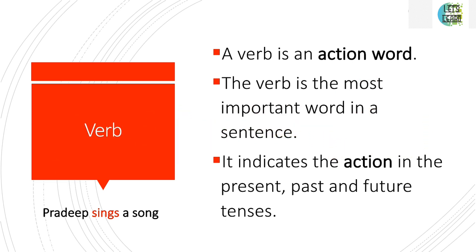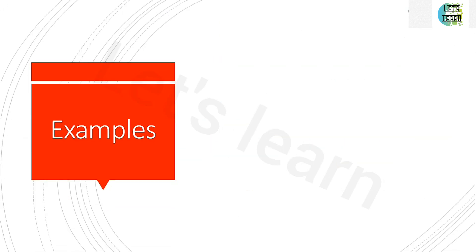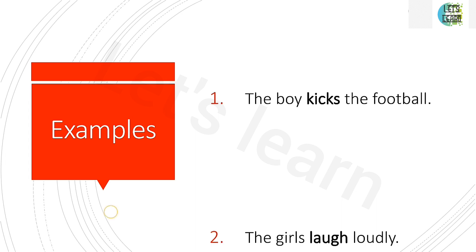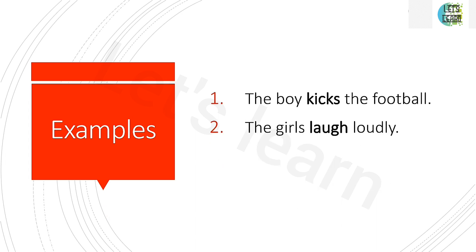Now, let's go into the topic. Let's see some examples with sentences for verb. The boy kicks the football. The girl laughs loudly. He ran a long distance. So, here kicks, laugh, and ran are the action words which are the verbs.